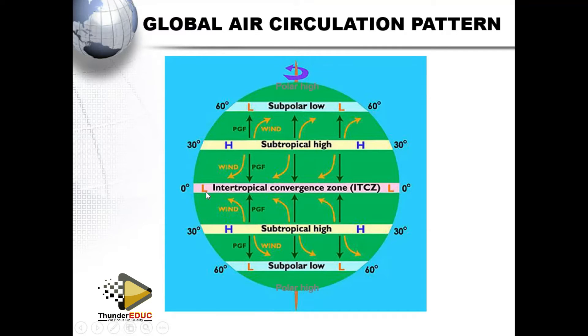Winds are named from their areas of origin. They move from the east going to the west, deflected by the Coriolis force, and therefore they will be known as Easterlies.